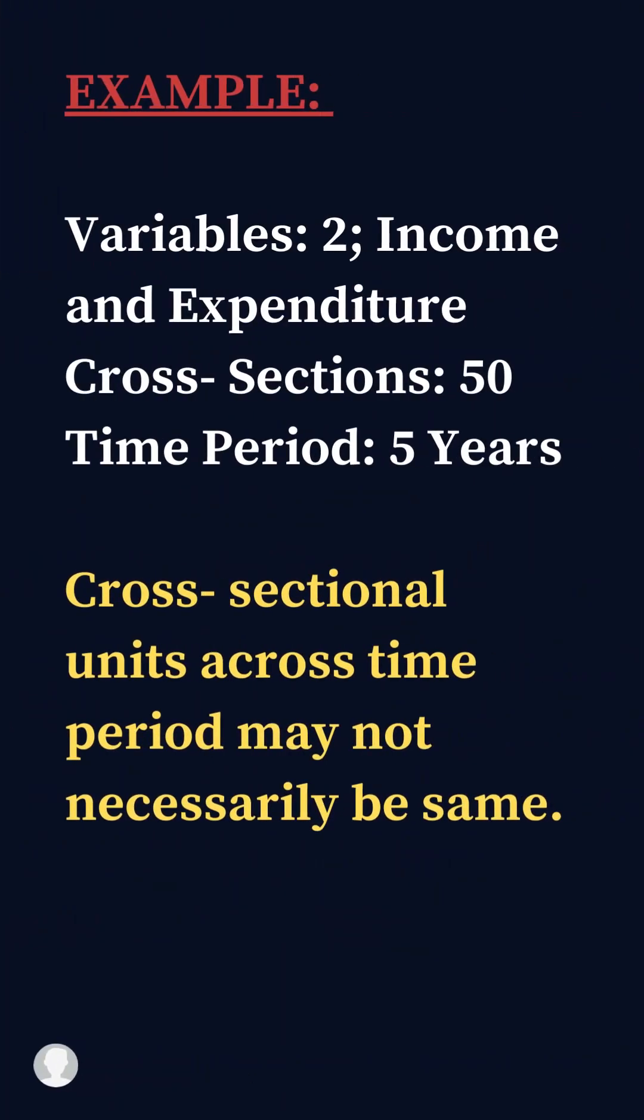For example, you want to study the changes in income and expenditure of 50 sample households in the last five years. You have two variables: income and expenditure. Cross-sections are 50 households. The time period is from 2016 to 2020.